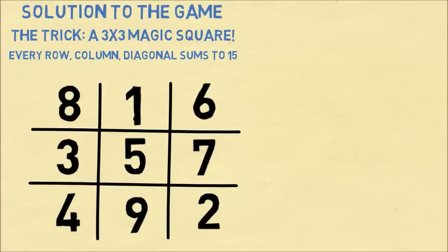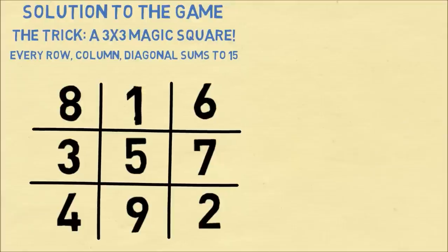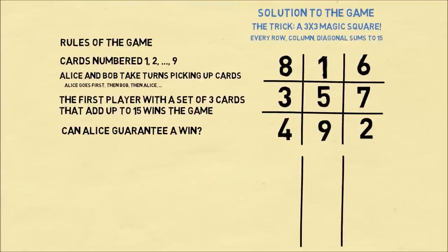So now we have a magic square where every row and column and diagonal sums up to 15. And those are the only sets of 3 numbers that add up to 15.